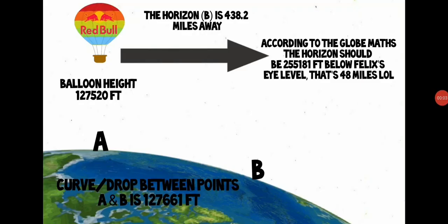So now we've got our figures here. Point A, point B shown here on the globe, showing the curve drop between the two points is 127,661 feet according to the globe. We've also got the balloon height here, 127,520 feet that Felix is sat in, and of course we've got the direction Felix is looking, the arrow seeing the horizon.